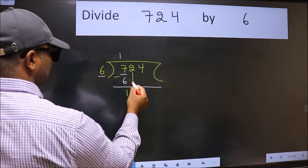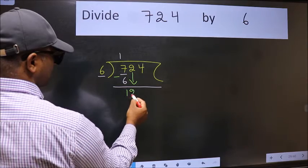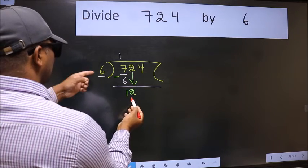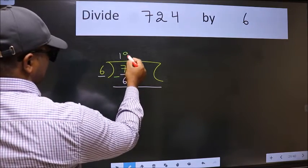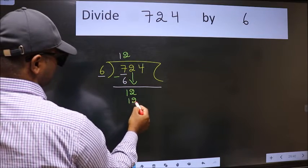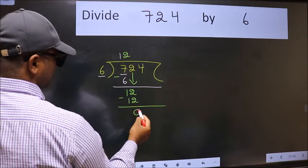After this, bring down the next number. So, 2 down, giving us 12. When do we get 12 in the 6 table? 6 twos is 12. Now we subtract and we get 0.